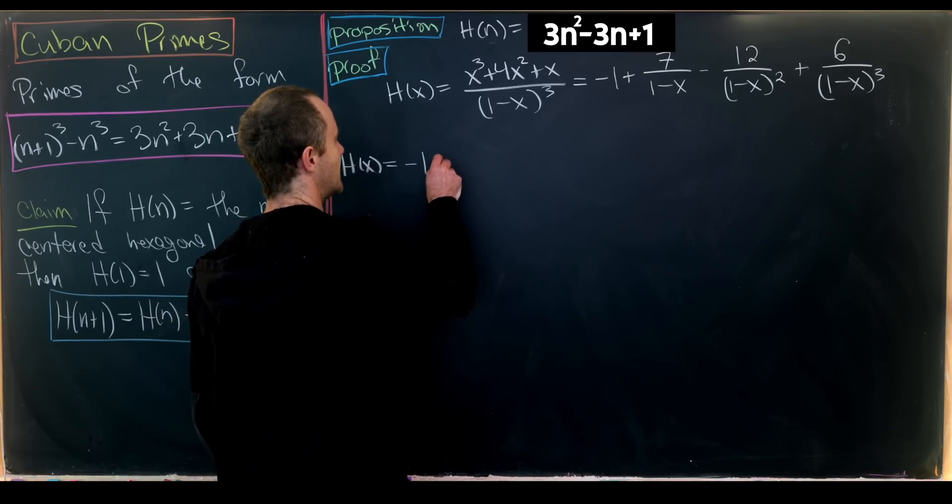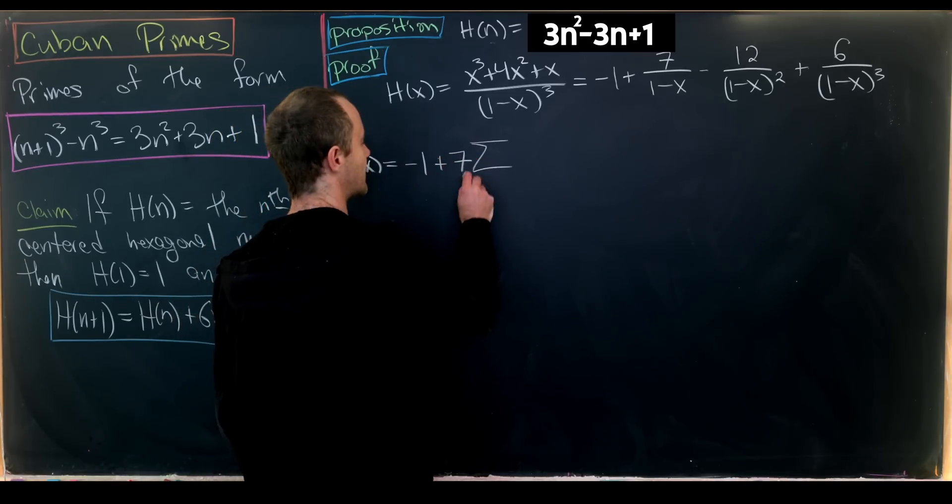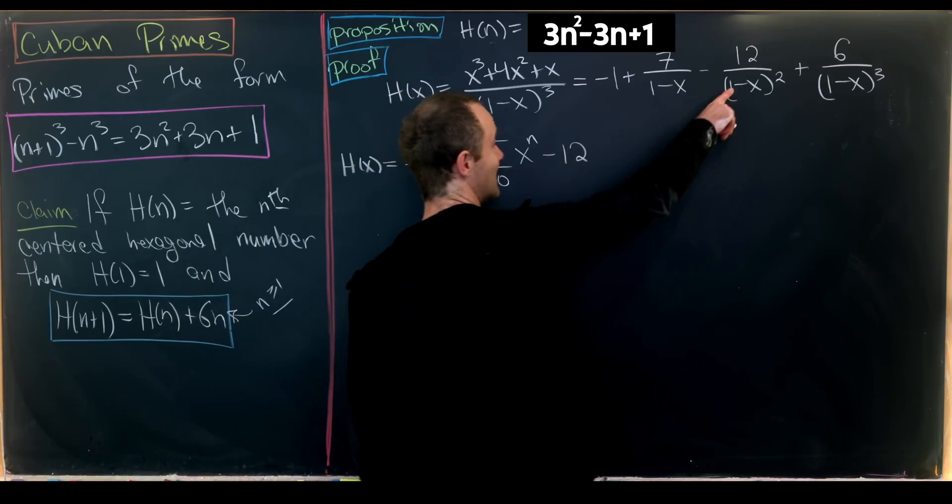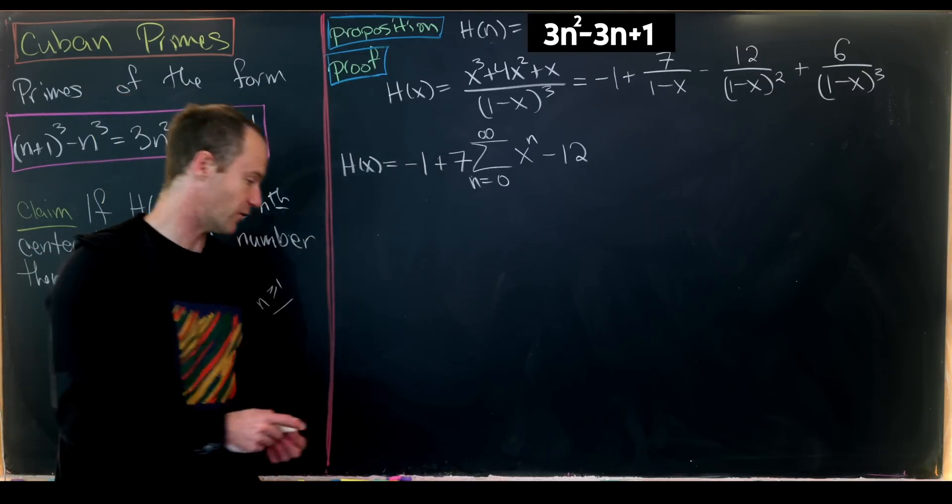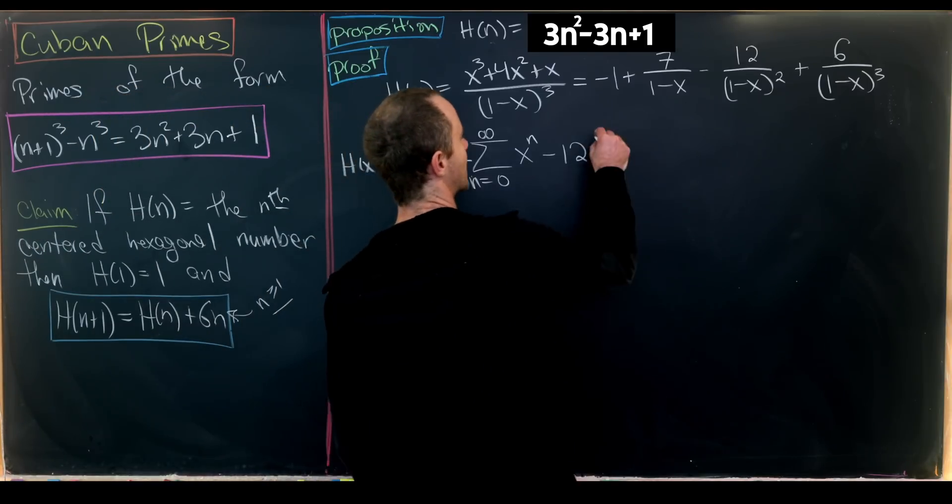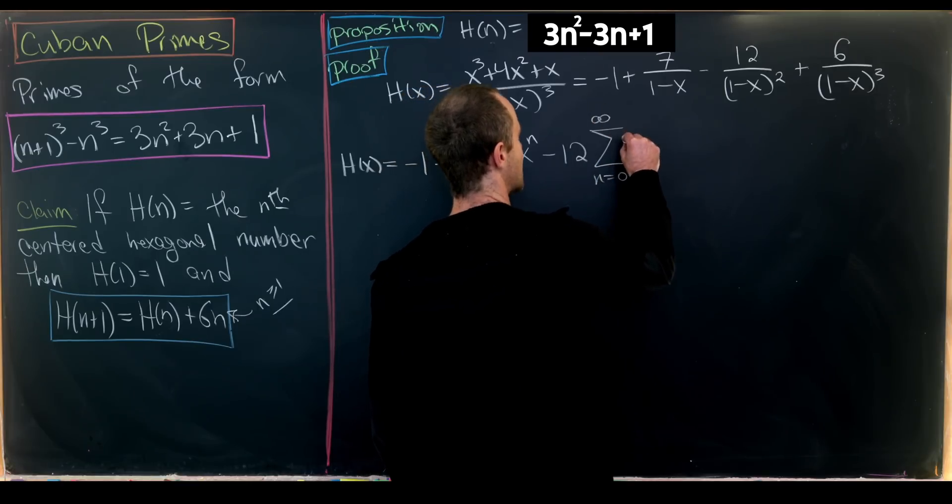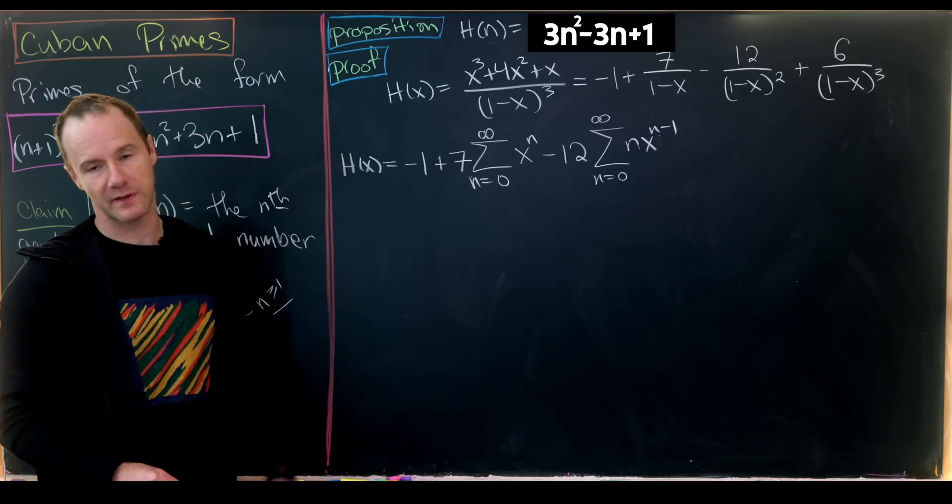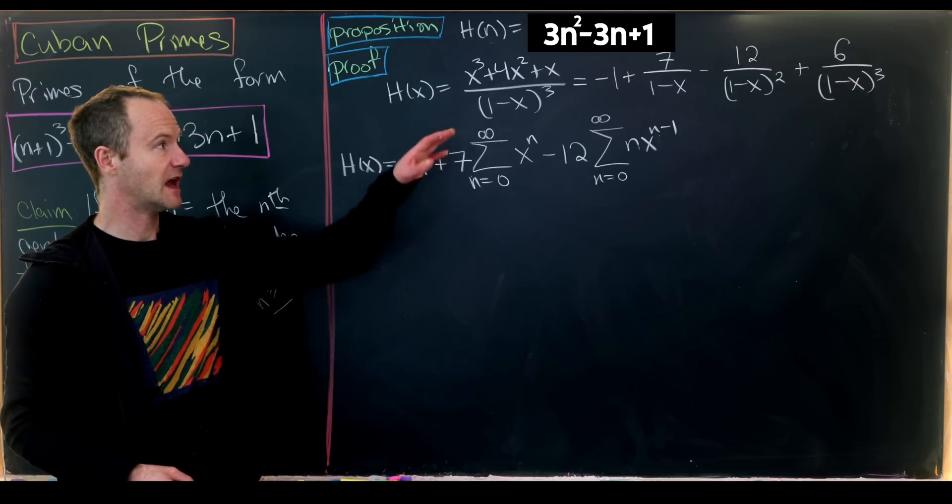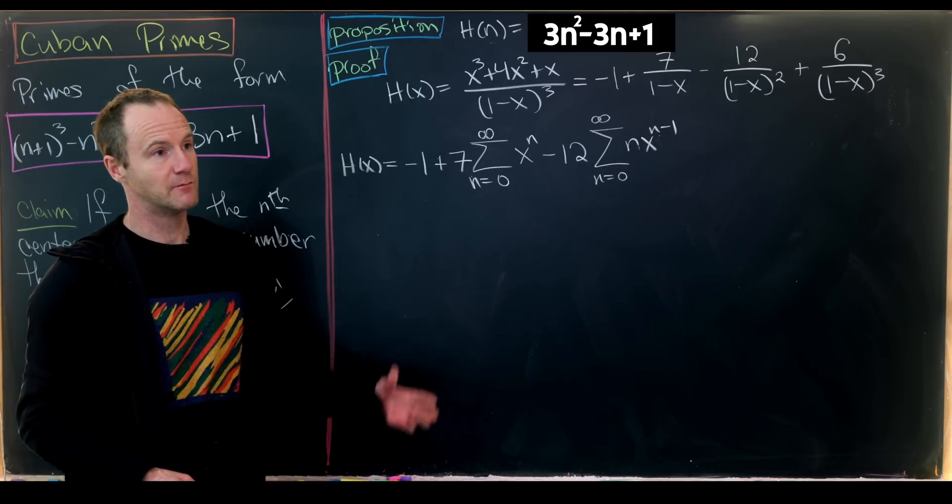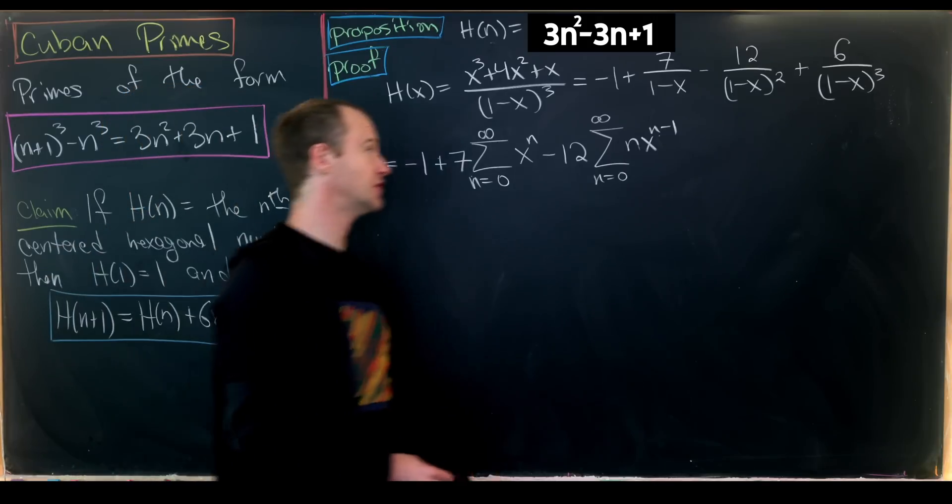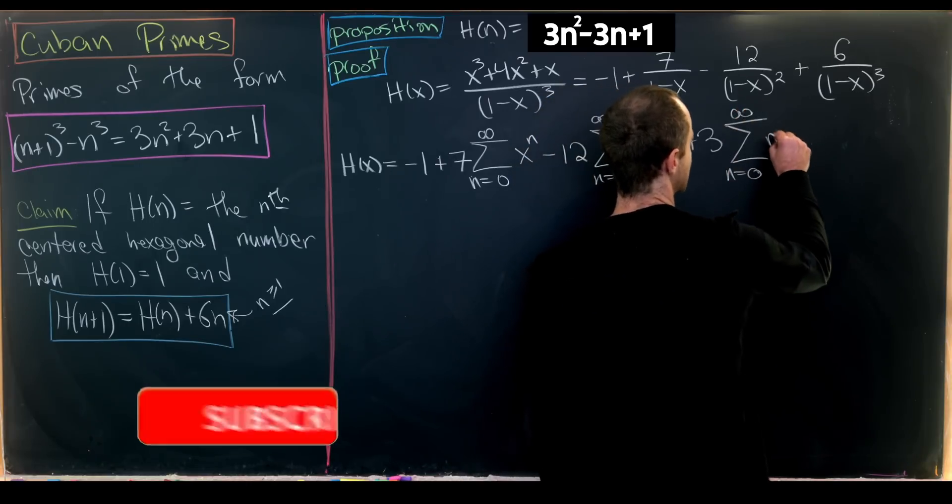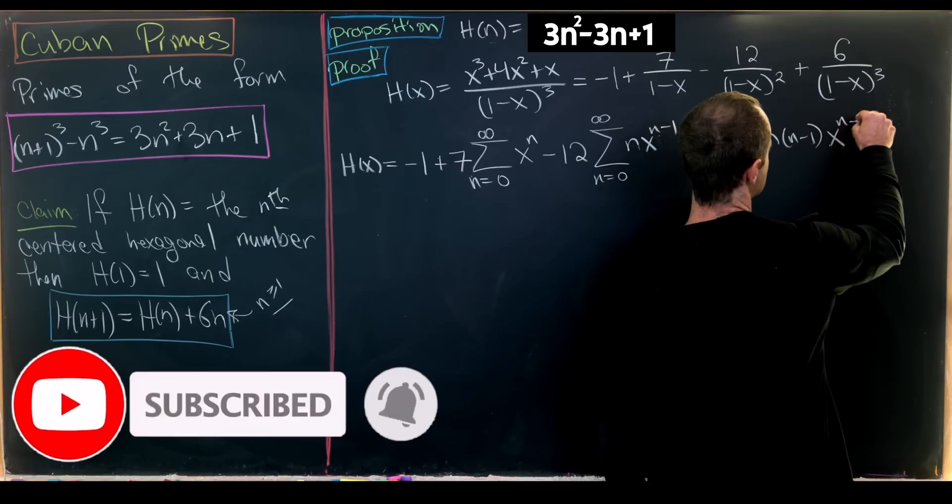We have -1 + 7·Σ(n=0 to ∞) x^n - 12·Σ(n=0 to ∞) nx^(n-1) + 3·Σ(n=0 to ∞) n(n-1)x^(n-2), where 1/(1-x)² is the derivative of 1/(1-x), and the factor 3 accounts for the second derivative coefficient.